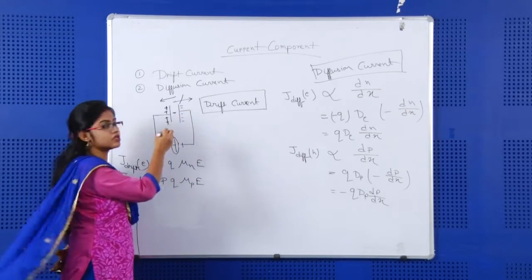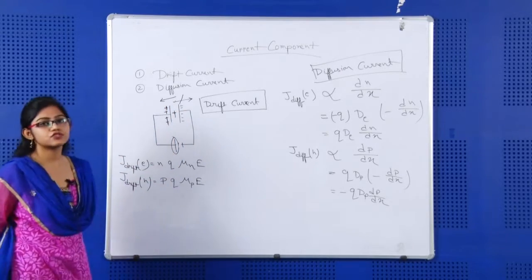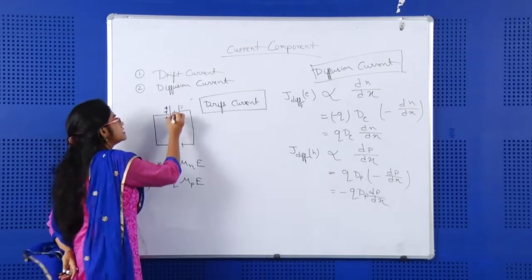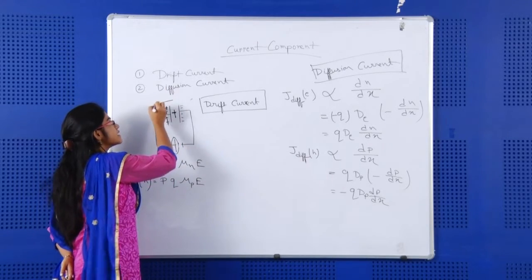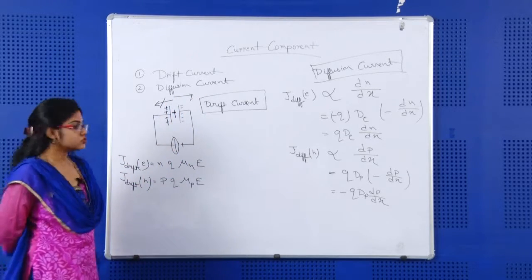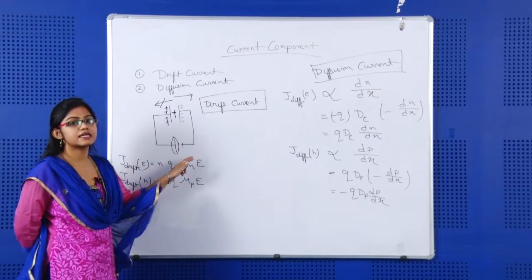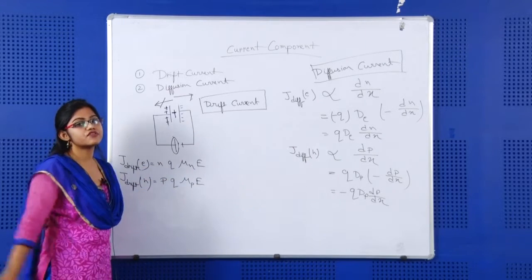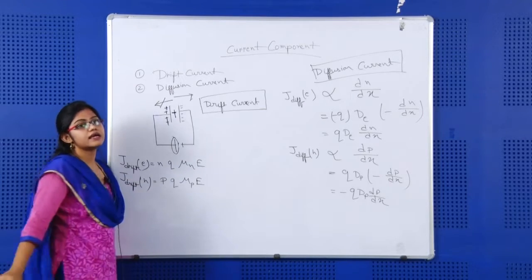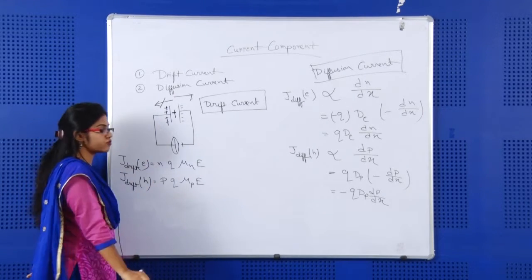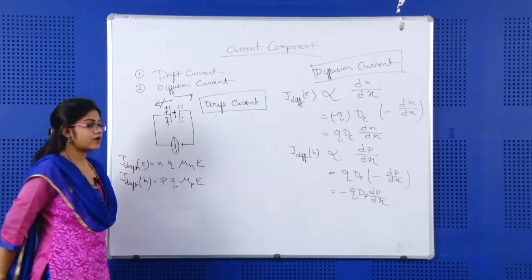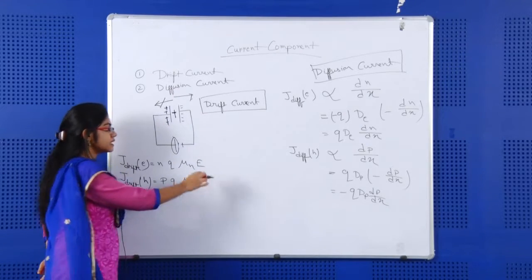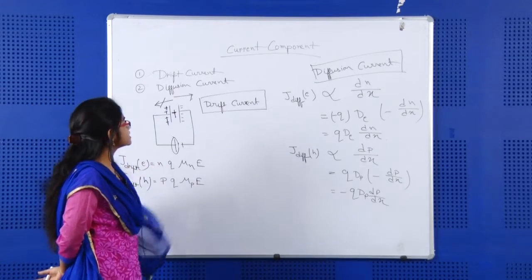In the case of positive charge (holes), the free charge cannot move in one direction but can flow in the other direction, depending upon the external potential by which the charge carrier will move. This type of current is called drift current. The drift current density for holes is: J_drift = p × q × μp × E, where p is the density of holes, q is the charge, μp is the mobility of holes, and E is the electric field across the device.